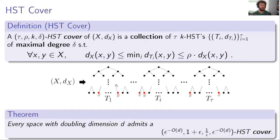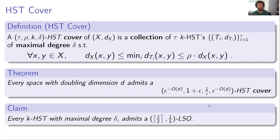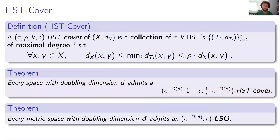For a doubling metric, one can construct an HST cover where the number of HSTs is epsilon-to-the-minus-d, the stretch rho is 1 plus epsilon, K is 1/epsilon, and the maximum degree is again epsilon-to-the-minus-d. Using this HST cover, and since each K-HST admits an LSO, we construct an LSO for each HST, take the union, and obtain an LSO for the doubling metric. The number of orderings is just epsilon-to-the-minus-d.